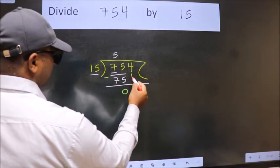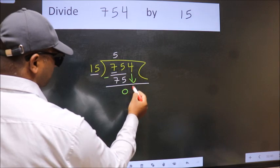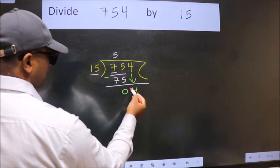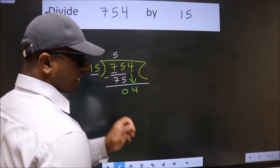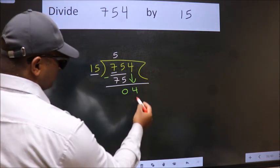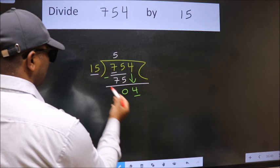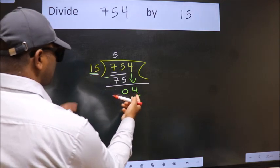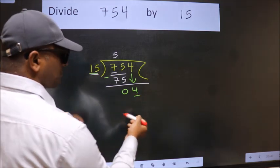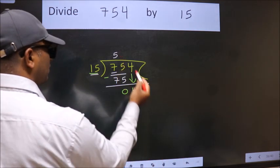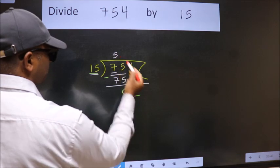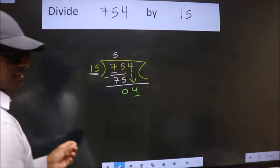After this bring down the beside number. So 4 down. After this step the mistake happens. And the mistake is this. Here we have 4. Here 15. 4 is smaller than 15. So what many do is they directly put dot, take 0, which is wrong.